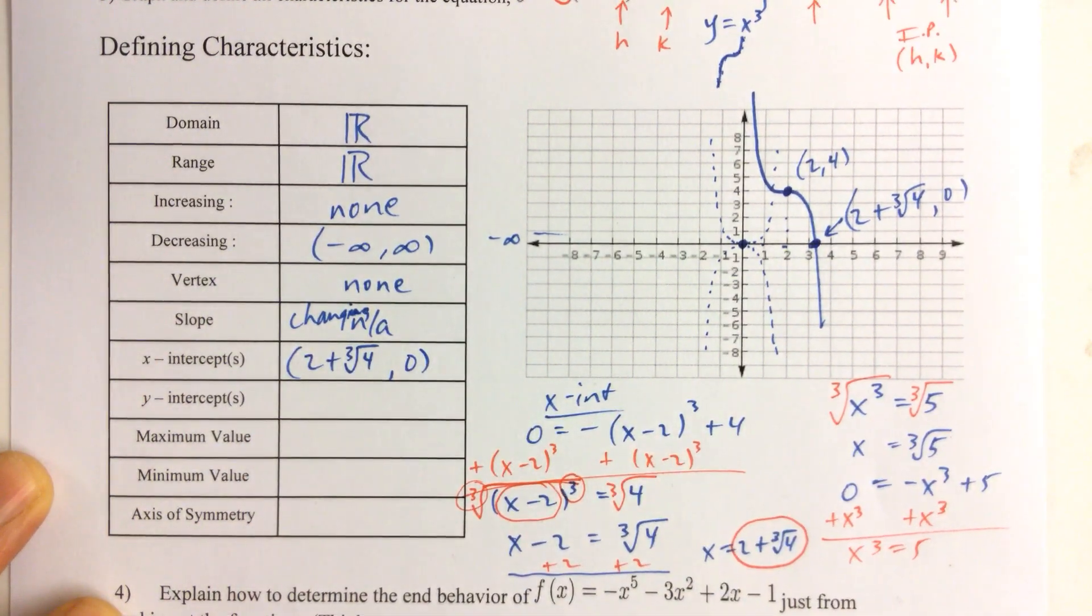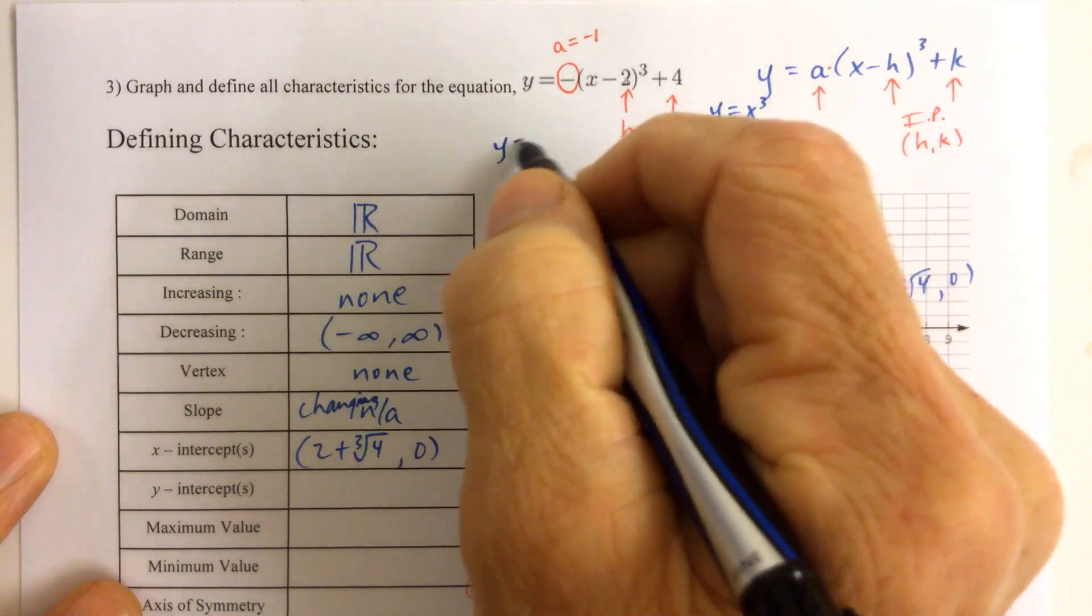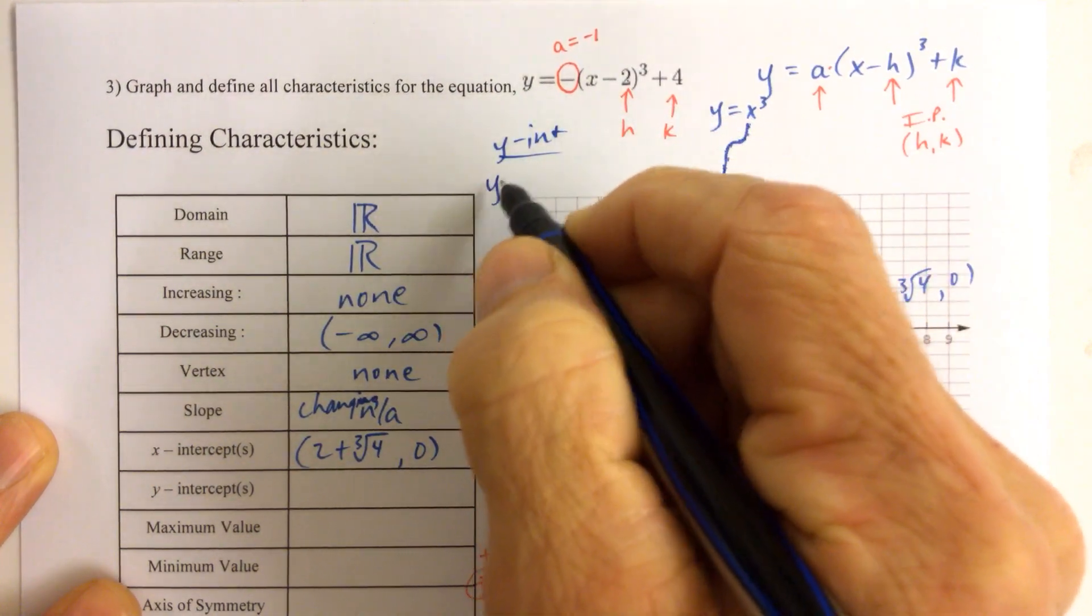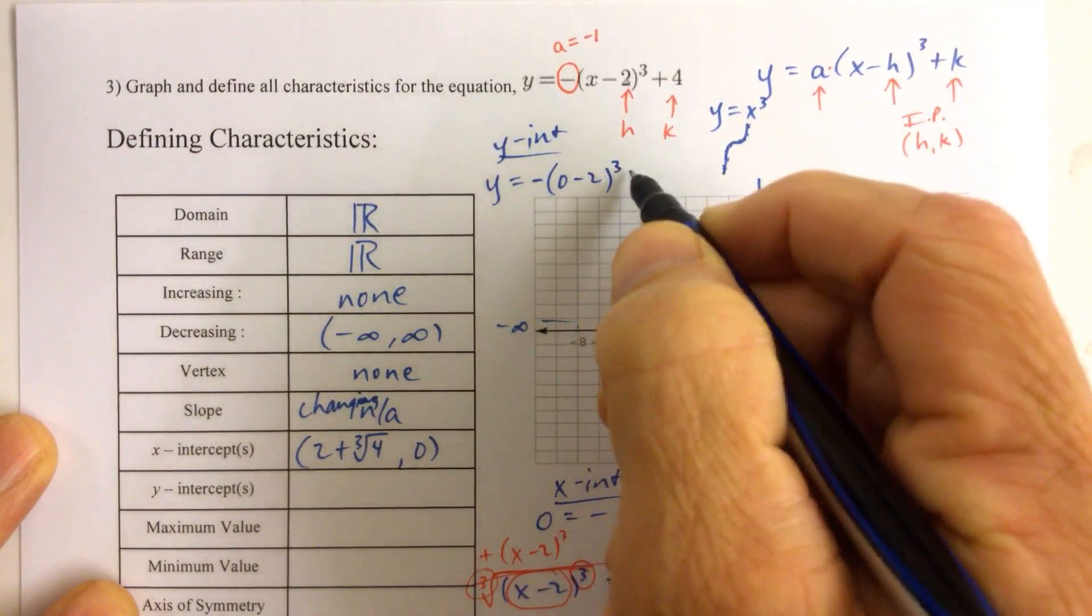And then for the y-intercept, we'll do that up here. We let x equal 0, and we solve the resulting equation. 0 minus 2 cubed plus 4. You've got to be careful here.